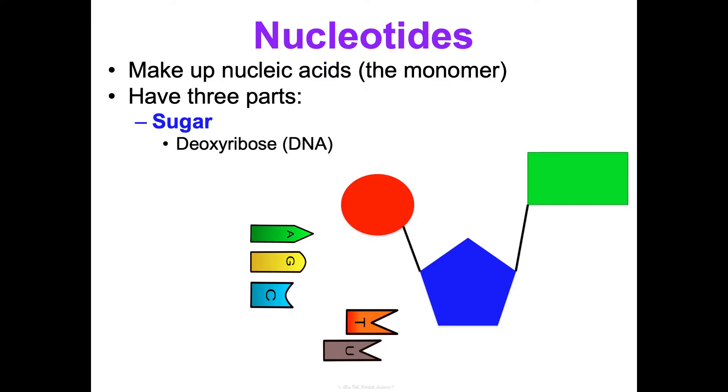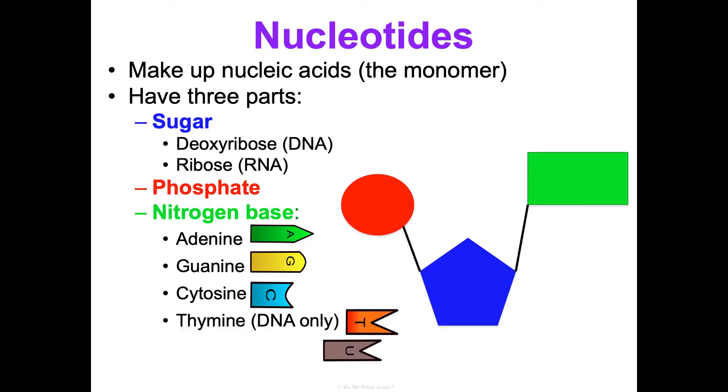A nucleotide has three parts. It's made of a sugar, which is deoxyribose in DNA and ribose in RNA - that's the sugar in blue. It has a phosphate group, which is pictured in red, and then it has a nitrogenous base or nitrogen base. This is what makes each nucleotide unique. It could be adenine, guanine, cytosine, thymine which is only in DNA, and uracil which is only in RNA.